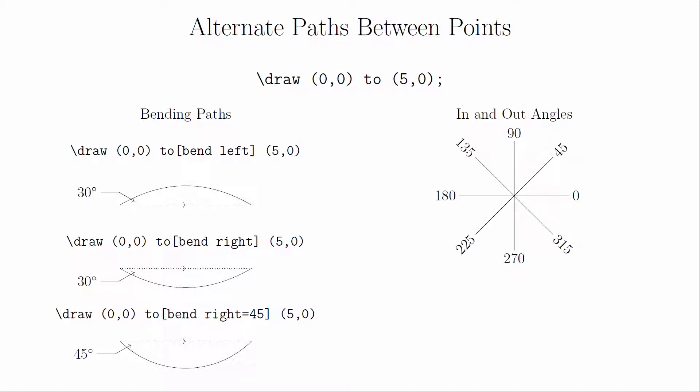You can also specify the out and in angles for the curve. The angles used here are the standard position angles, so that zero is pointing to the right. The out angle is the angle that the curve leaves the initial point from, and the in angle is the angle the curve enters the terminal point at. This gives you even more control over the shape of the curve.